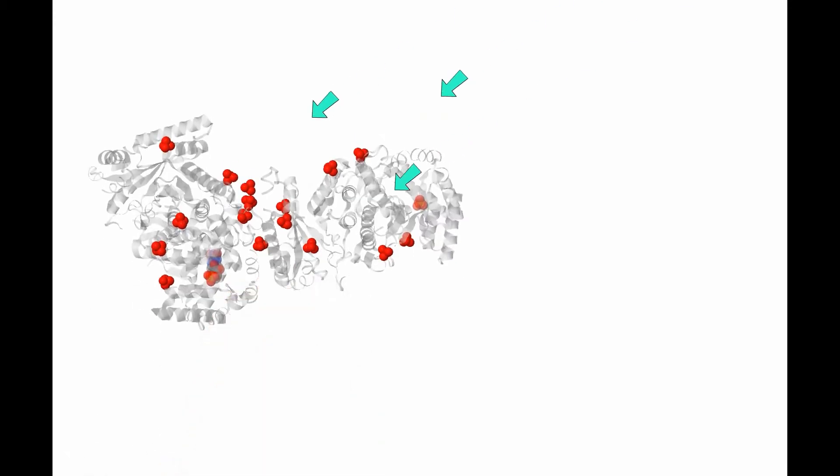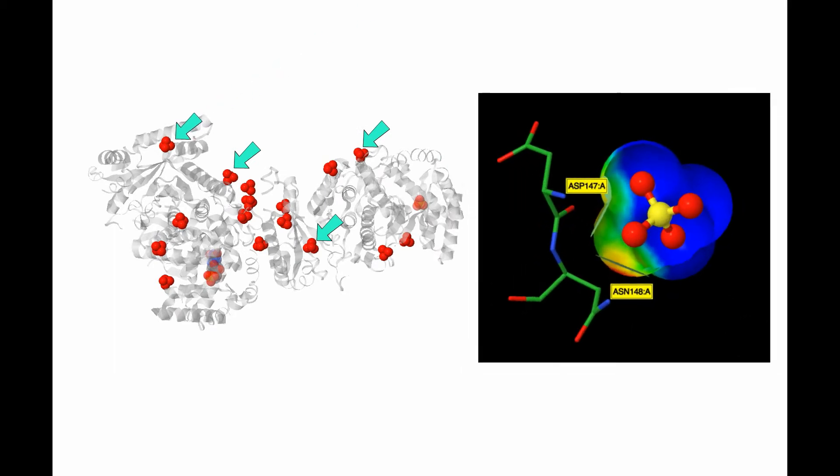And here, the position of several sulfate ions dispersed over the two subunits. Each sulfate ion is in contact with two residues: asparagine and aspartic acid.